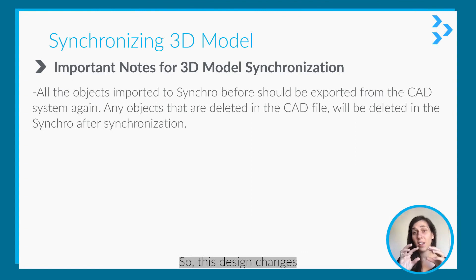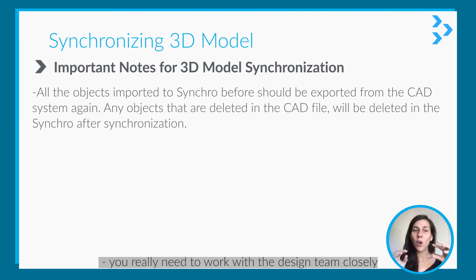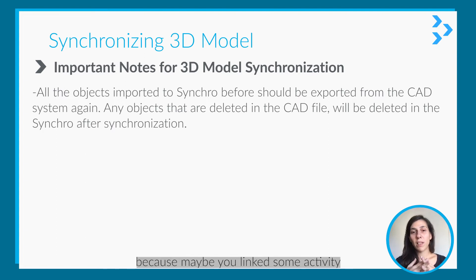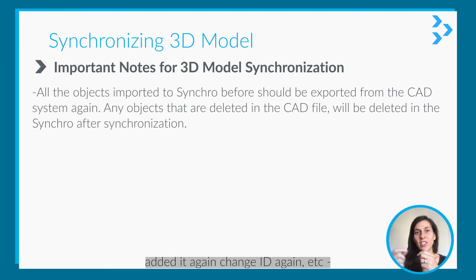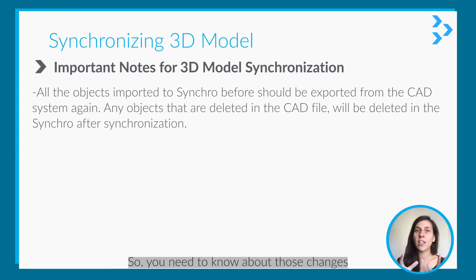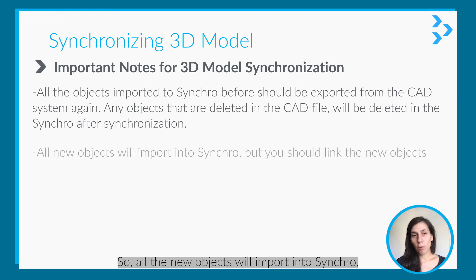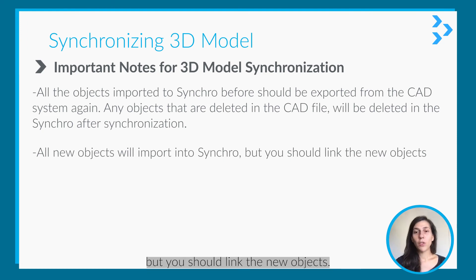You really need to work closely with the design team, because you may have linked some activity to an object in the model, but they might delete it, edit it, or change its ID. You need to know all those changes to be able to re-link it. All new objects will be imported into Synchro, but you will need to link those new objects manually.